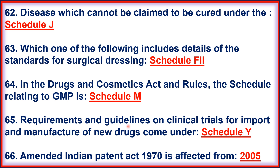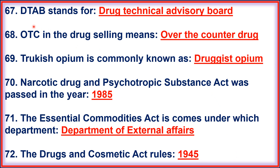64. In the Drug and Cosmetic Act and Rules, the schedule relating to GMP is Schedule M. 65. Requirements and Guidelines on Clinical Trials for Import and Manufacture of New Drugs comes under Schedule Y. 66. Amendment to the Indian Patent Act 1970 is affected from 2005. 67. DTAB stands for Drug Technical Advisory Board. 68. OTC means Over-the-Counter Drug. 69. Turkish Opium is commonly known as Drugist Opium. 70. Narcotic Drug and Psychotropic Substance Act was passed in the year 1985.